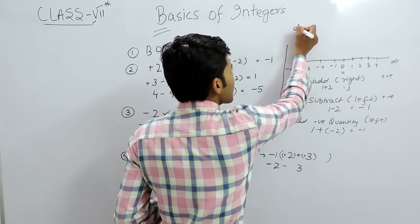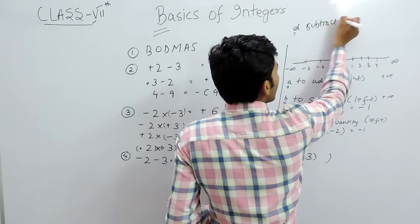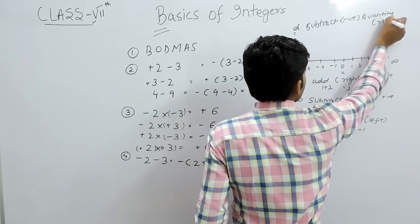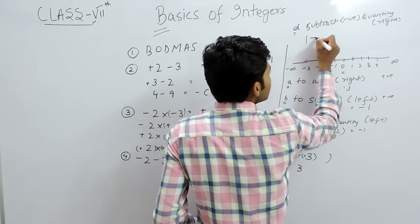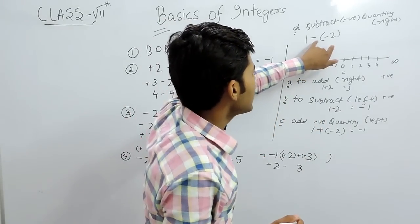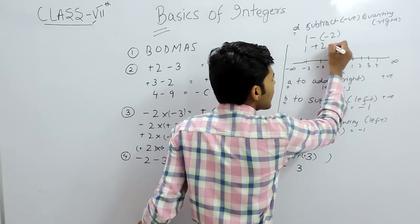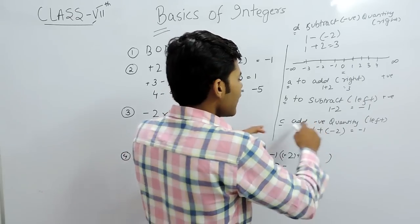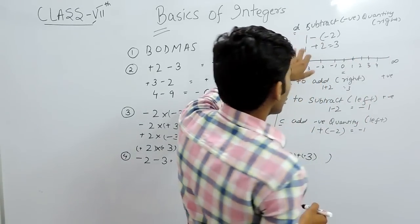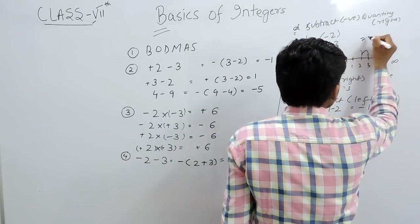When subtracting a negative quantity, we move to the right. For example, 1 minus minus 2: since minus times minus gives plus, this becomes 1 plus 2, which equals 3. On the number line, starting at 1 and moving 2 steps to the right, we also get 3.